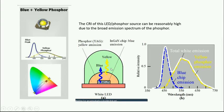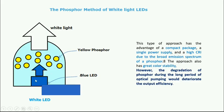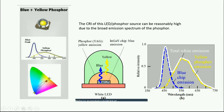This figure is very important from an examination point of view. The main advantage of the phosphor method is that it is easy to manufacture and provides a high CRI with broad emission spectra. However, the main problem is that degradation of the phosphor during long periods of optical pumping deteriorates the output efficiency. For exam answers, drawing this spectrum — with a blue spike, a yellow broad peak, and the combined average covering the visible region — is mandatory.